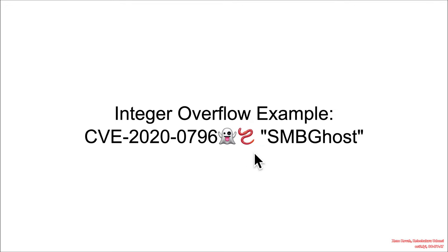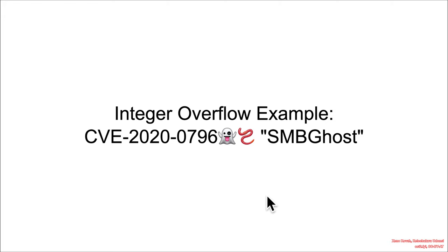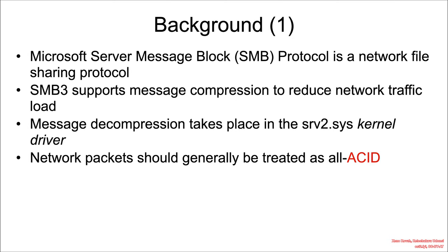This is a vulnerability dubbed SMB Ghost, and it affects SMB. Specifically, it is wormable — meaning it is a vulnerability that can self-propagate. Someone could make a worm where the code exploits a server with SMB capabilities, that exploited server could exploit another, and so on. The point of a worm is it's self-propagating malware, and this vulnerability could do exactly that.